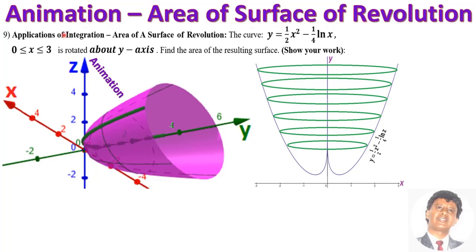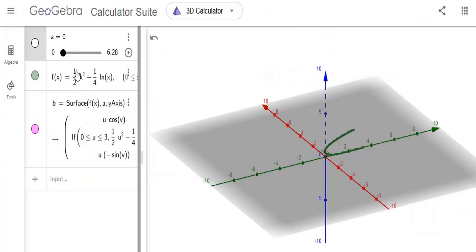The curve y equals one-half x squared minus one-fourth ln(x), where x is between 0 and 3, is rotated about the y-axis. Find the area of the resulting surface. That is y equals half x squared minus one-fourth ln(x), and you rotate this around the y-axis. This is the volume that is generated. In the animation, y equals half x squared minus one-fourth ln(x) is the curve, and it is about to rotate around the y-axis.